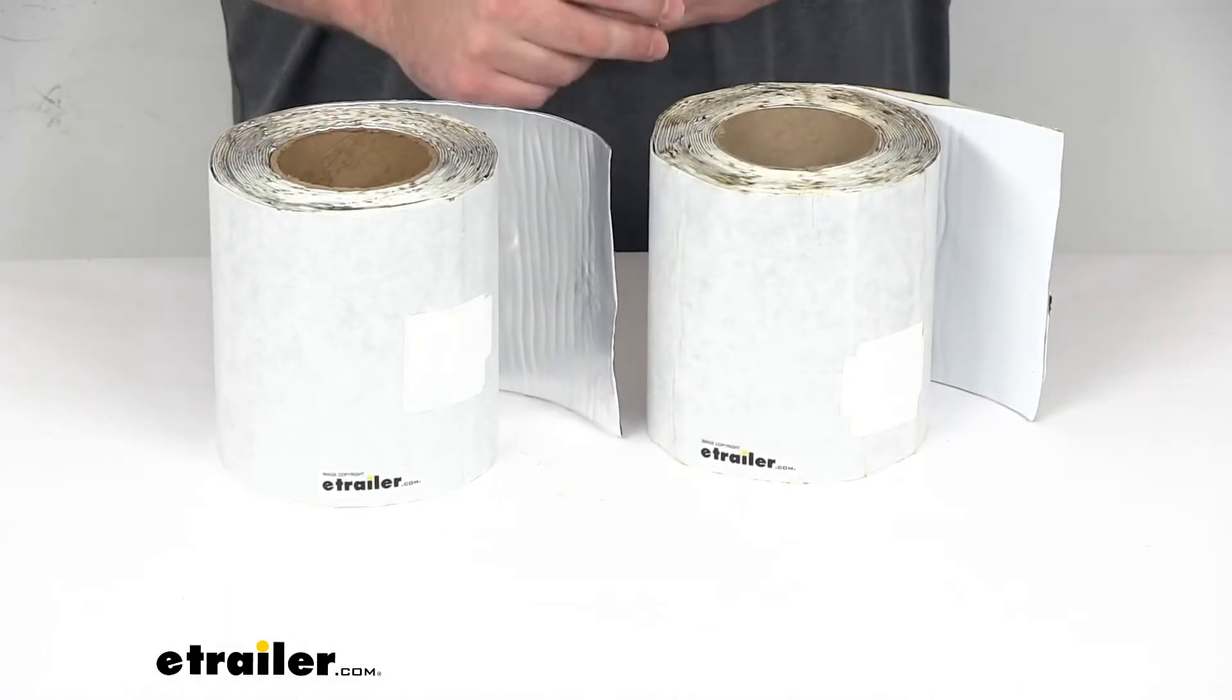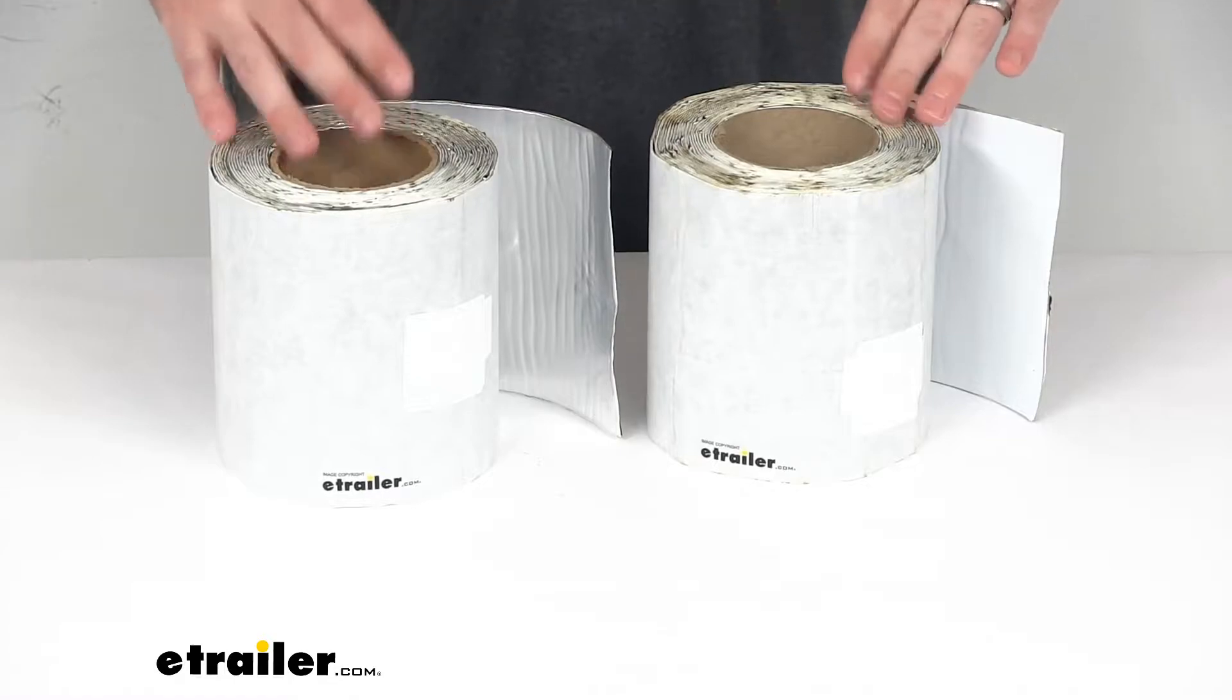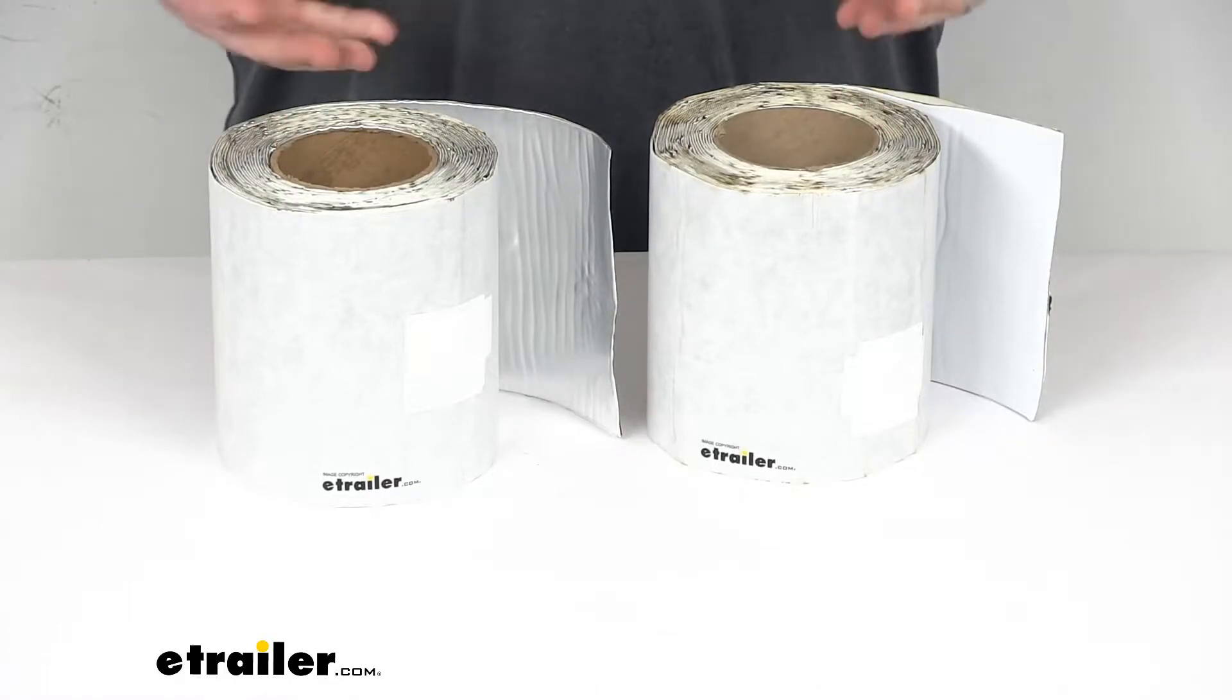This tape is going to help seal joints, seams, and damage on your RV's roof. It will adhere to lots of different materials, including wood, metal, fiberglass,